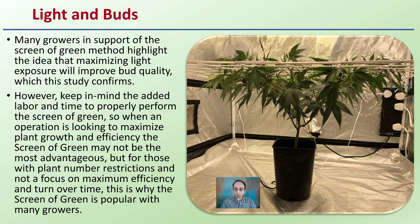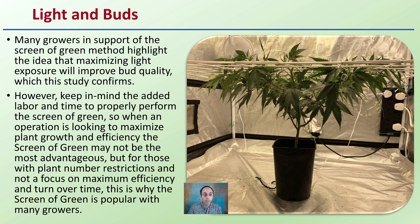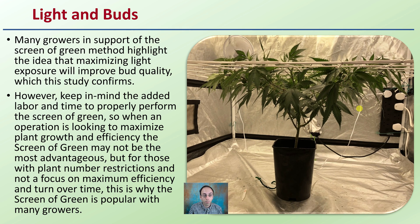So how does this relate? Many growers in support of the screen of green method highlight the idea that maximizing light exposure will improve bud quality, which this study confirms. This is support of the screen of green method where all those buds are growing on the same platform, the same plane, all pointing up, all getting the maximum amount of light. However, keep in mind the added labor and time required to properly perform the screen of green method, so it may not be the most advantageous pruning method when maximizing efficiency.